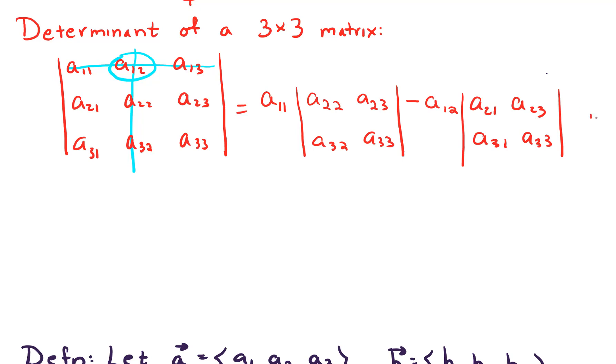The last expansion we need to do is A13 times the determinant of the 2 by 2 matrix that's left over after removing row 1, column 3. And that little 2 by 2 looks like A21, A22, A31, and A32. Okay, let's work all of that out.